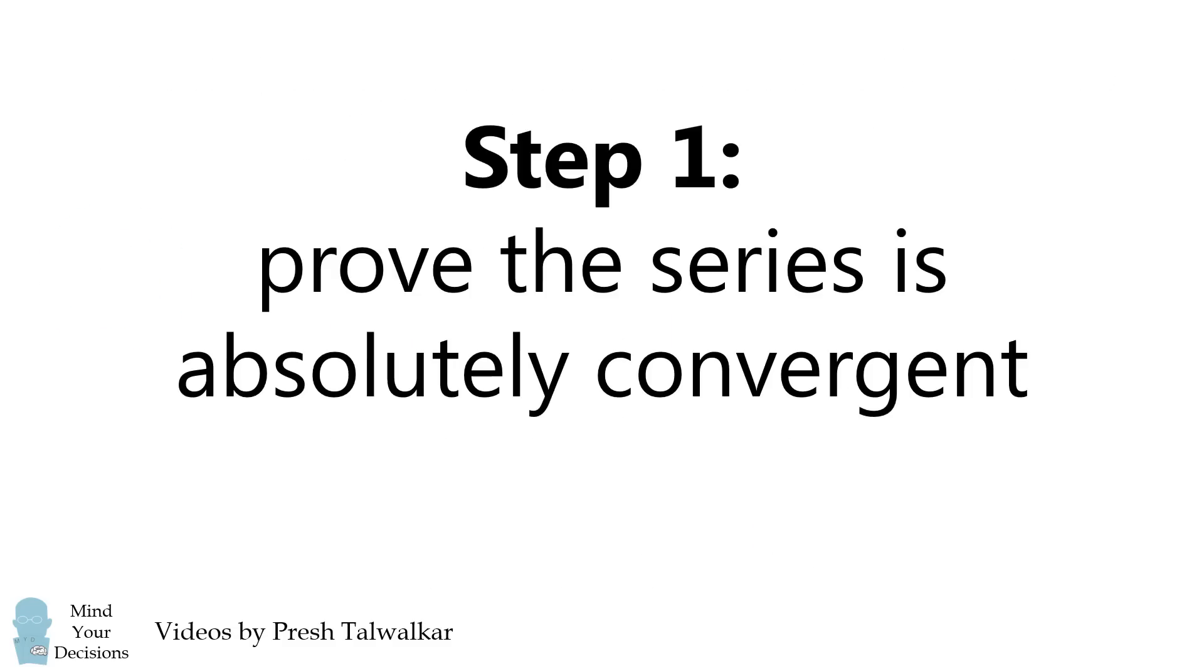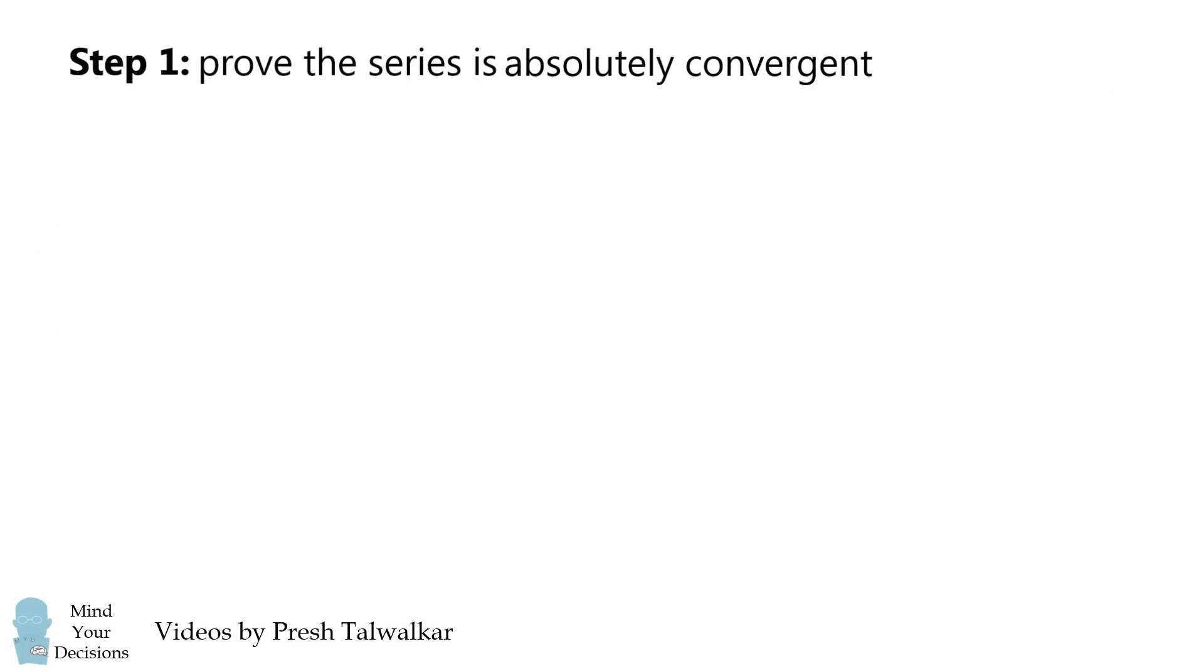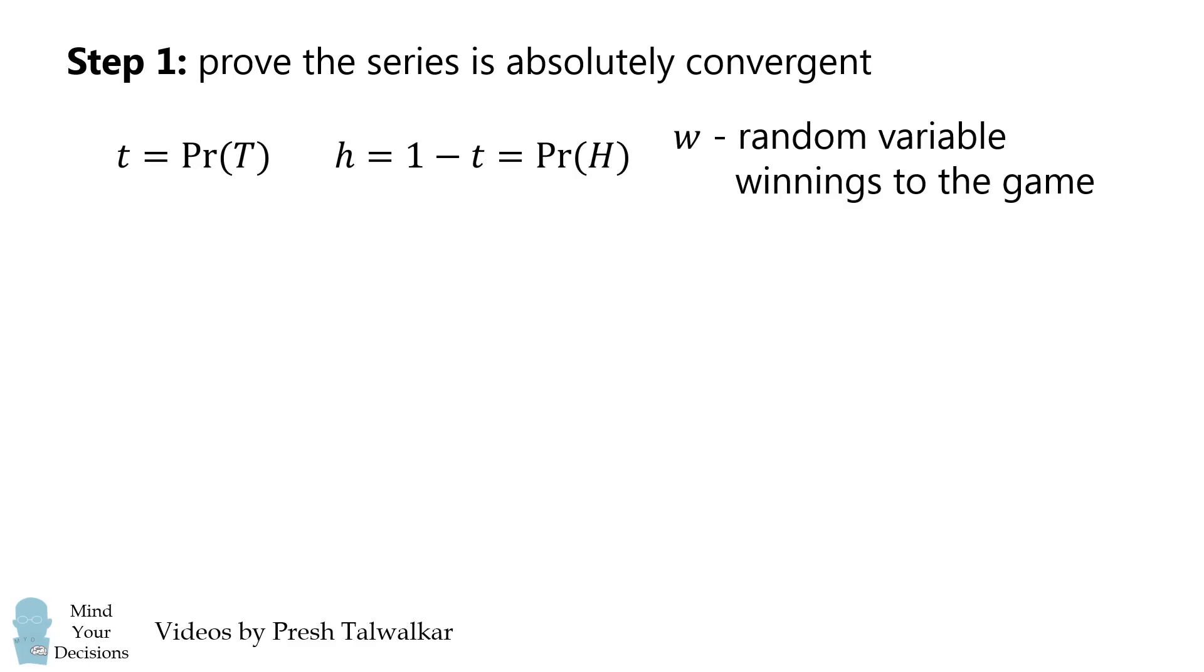Now, before we go calculating, I'm going to prove the series is absolutely convergent. This is so we can deal with the infinite series and not get any crazy results. We'll write T to be the probability of getting a tails, H to be 1-T, which is the probability of getting a heads. We'll write W to be a random variable equal to the winnings of the game. We want to calculate E(W).